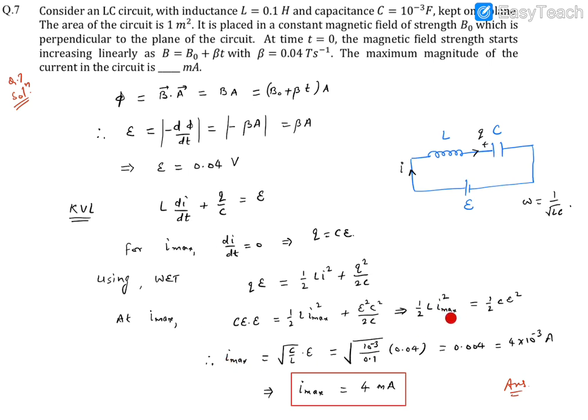Now from here, I_max turned out to be, with half getting cancelled, square root of C/L times E. So this is the expression for maximum current in the circuit.